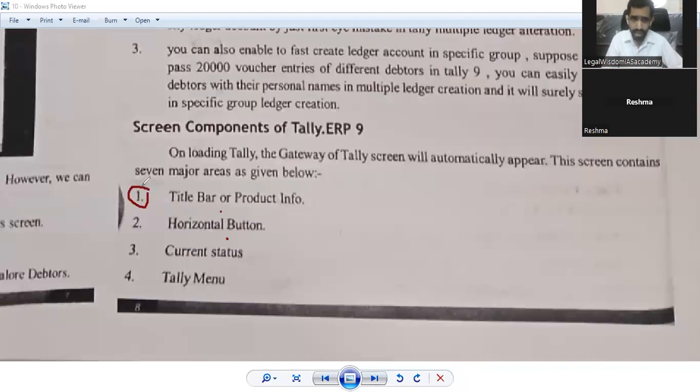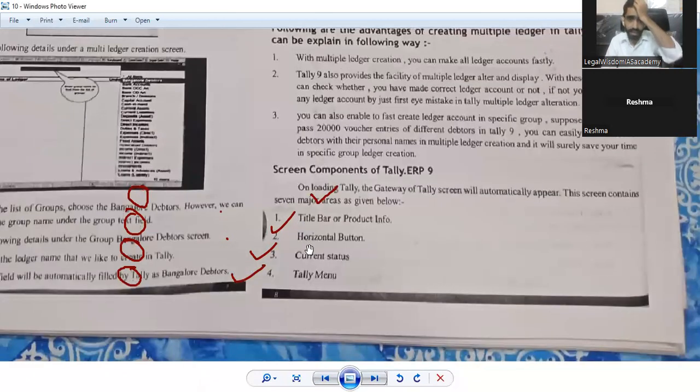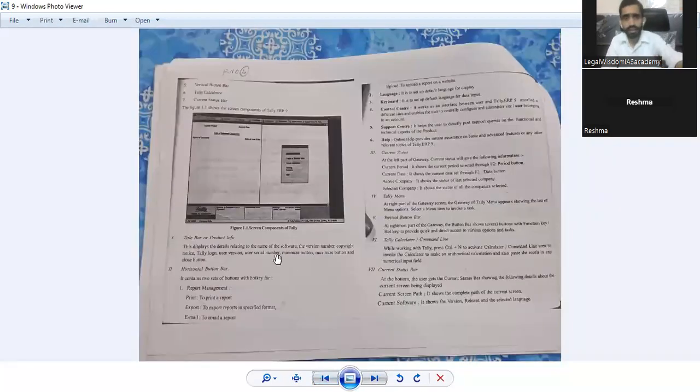What are those seven major areas? The very first area is title bar, which is also known as product information. Second one is horizontal button. Third one, the current status to know the current data or current information. Fourth one, the Tally menu. There are seven major areas, we have discussed four in a summarized way. Now let us see the next three.